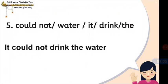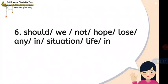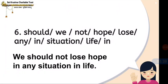Understood, children — you have to rearrange the words to form a correct sentence. Sixth one: 'should, we, not, hope, lose, any, in, situation, life, in.' I'll give you one clue — this is the moral of the story. Can you tell now? Good children, the answer is: We should not lose hope in any situation in life. So this is the moral of our story, A Wise Crow.